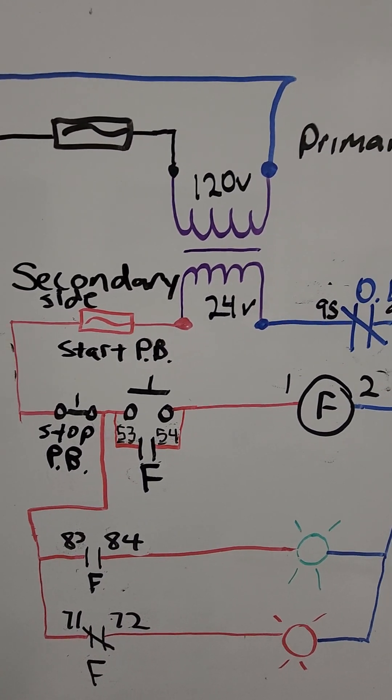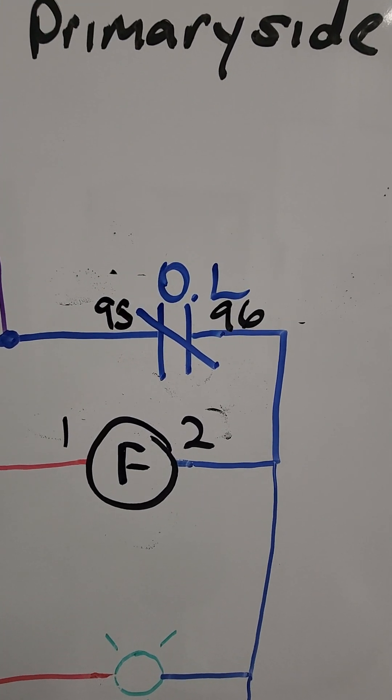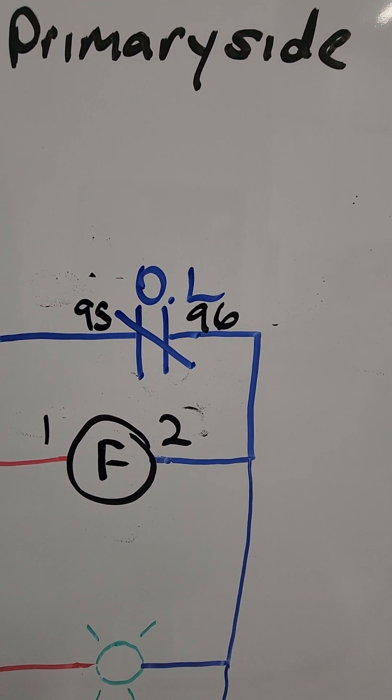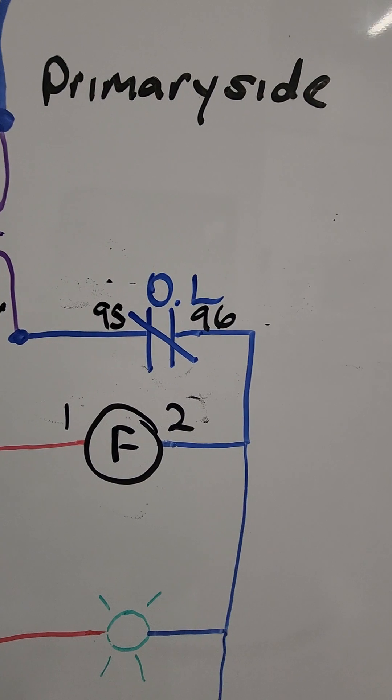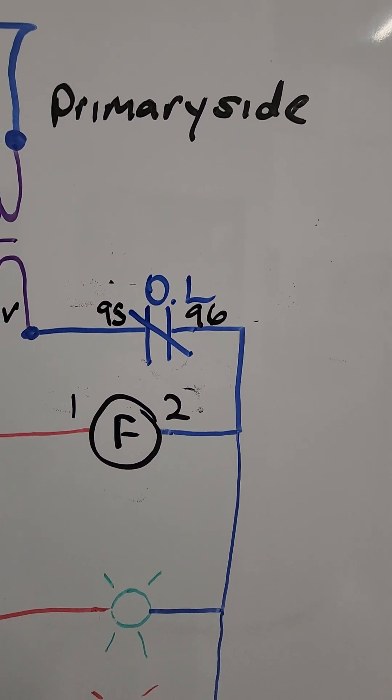You have your stop button, your start button, and your forward contactor. F stands for forward contact, not control relay, but the forward contact.